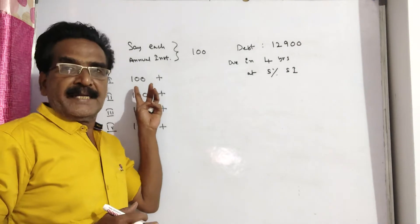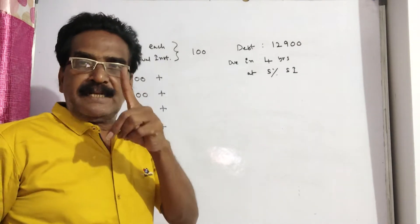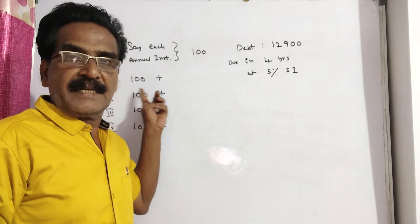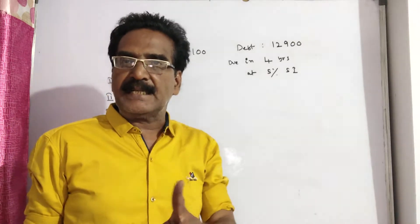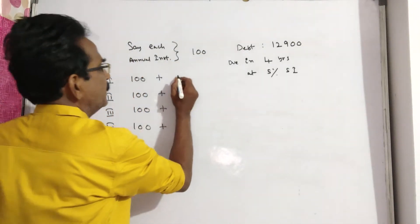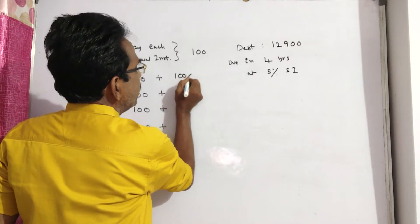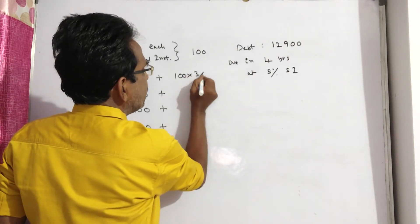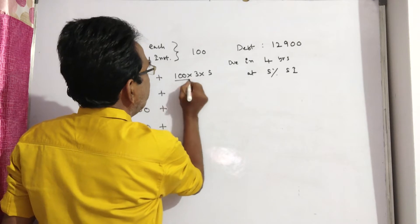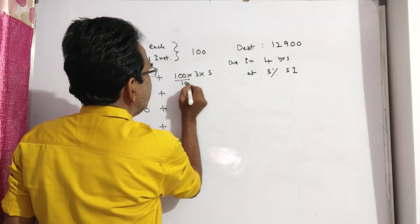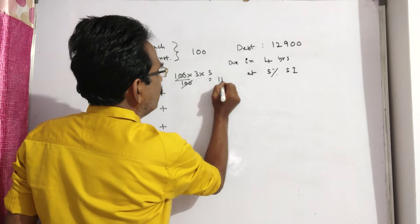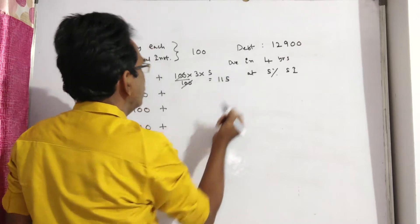So, you pay Rs 100 at the end of the first year. That means this Rs 100 will fetch interest for the remaining 3 years. So P × T = 100 × 3 × 5% / 100, which is equal to 15. So the total amount will become Rs 115.